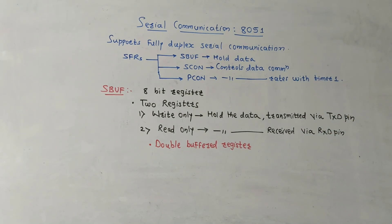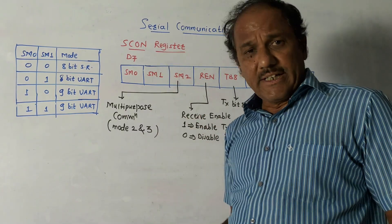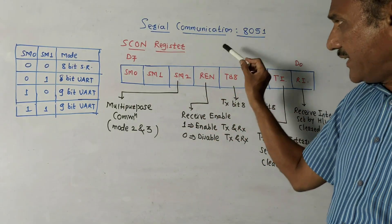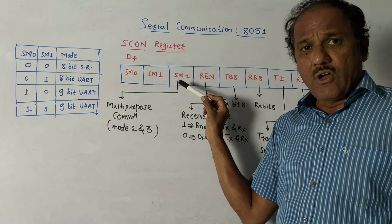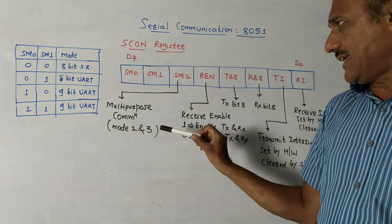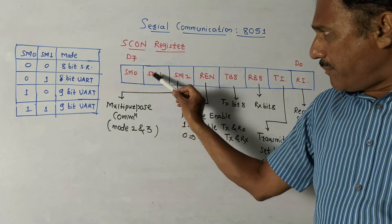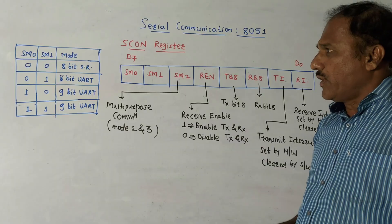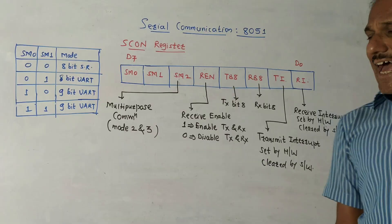Next part is serial control register, that is SCON register. We have already discussed this register while studying the interrupt related to serial communication mode. Now we will discuss what is the meaning of each and every content of this register. It is an 8-bit register. LSB is D0, MSB is D7. First two bits SM0 and SM1, depending on this combination, different modes are decided which are shown in this table.